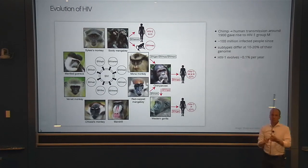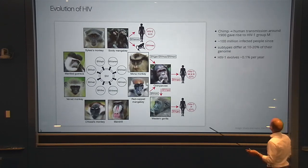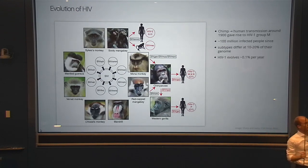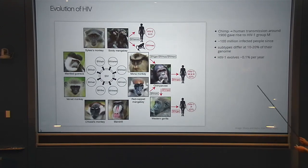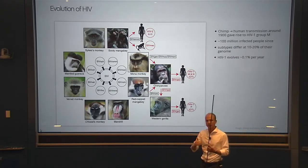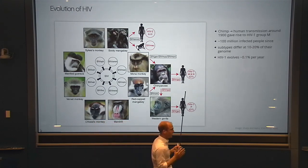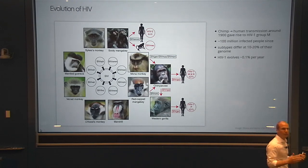This was just one single event where one virus jumped from a chimpanzee to a human, probably in the context of bushmeat hunting. Since then it has diversified and evolved into a number of subtypes that now differ at something between 10% and 20% of positions in the HIV genome. To put this in context, humans and chimpanzees differ at about 1% of genome sites — so these viruses have covered roughly 10 times the evolutionary distance between humans and chimps in about 100 years.